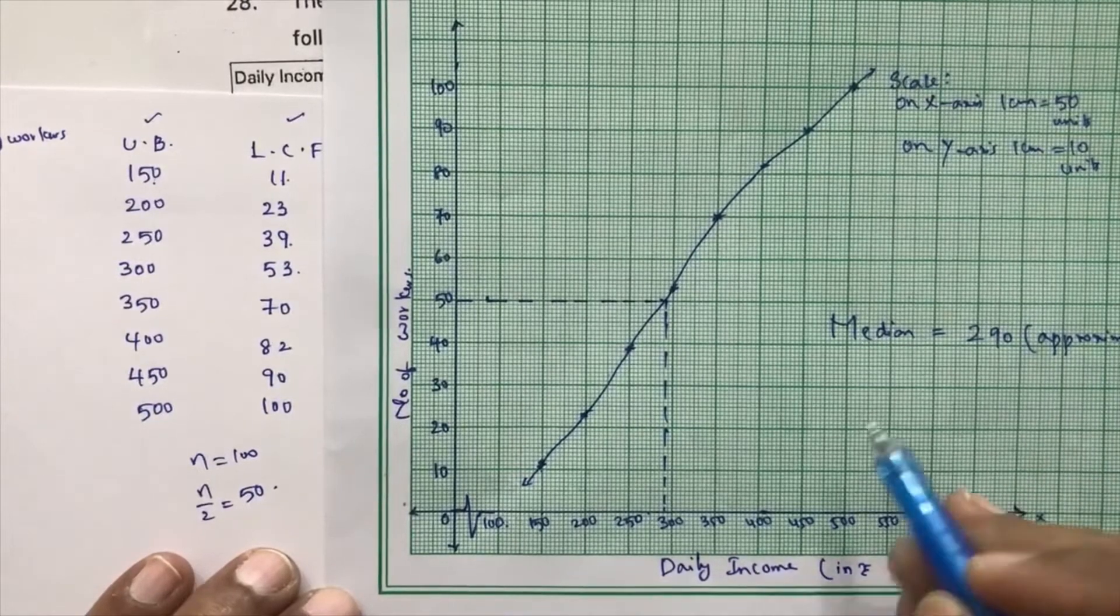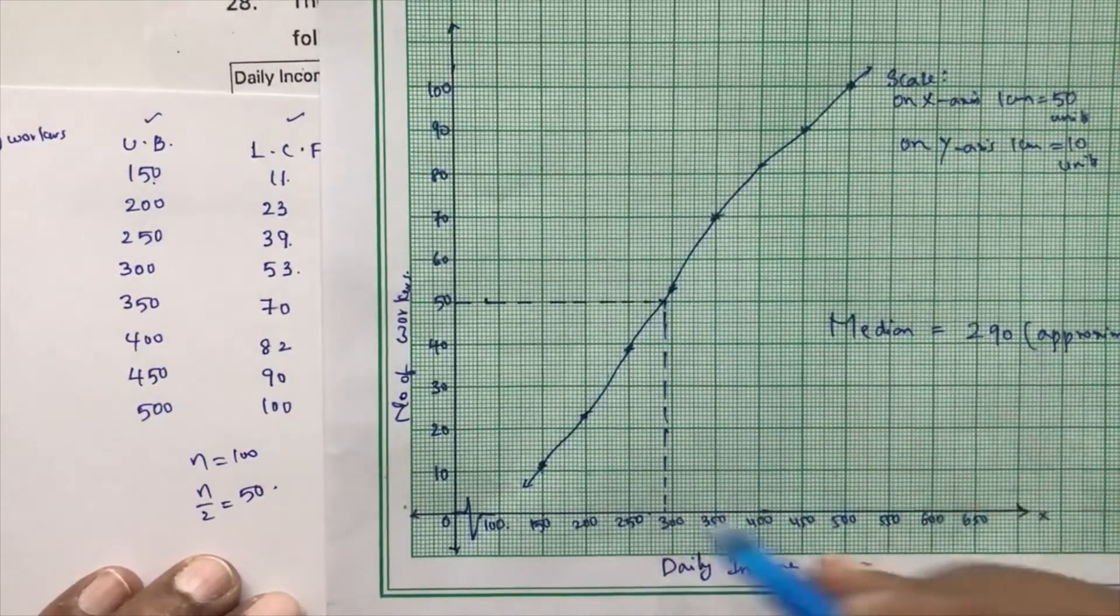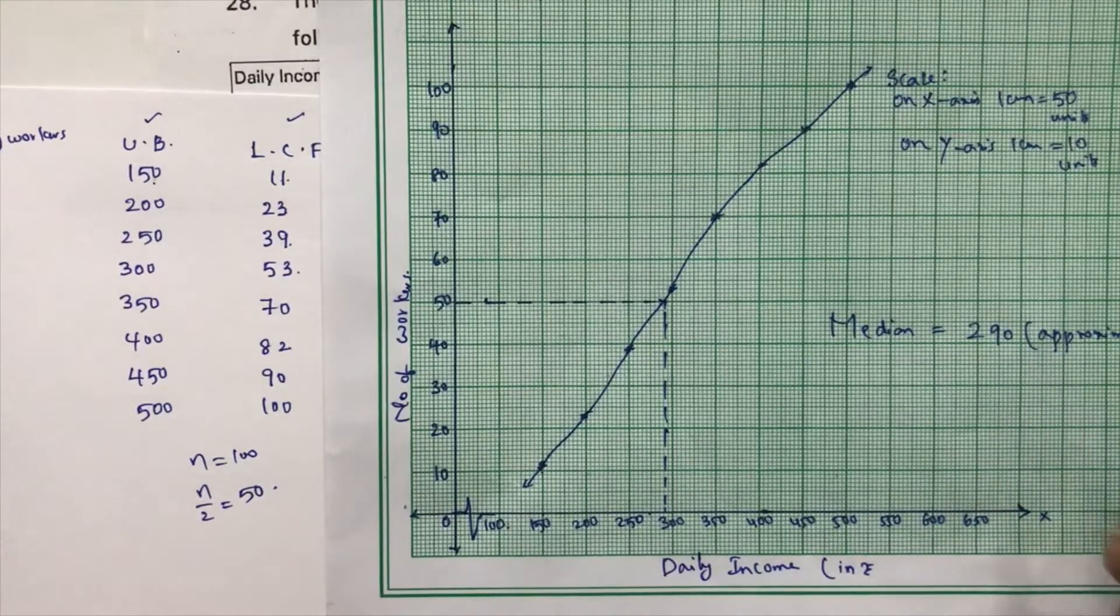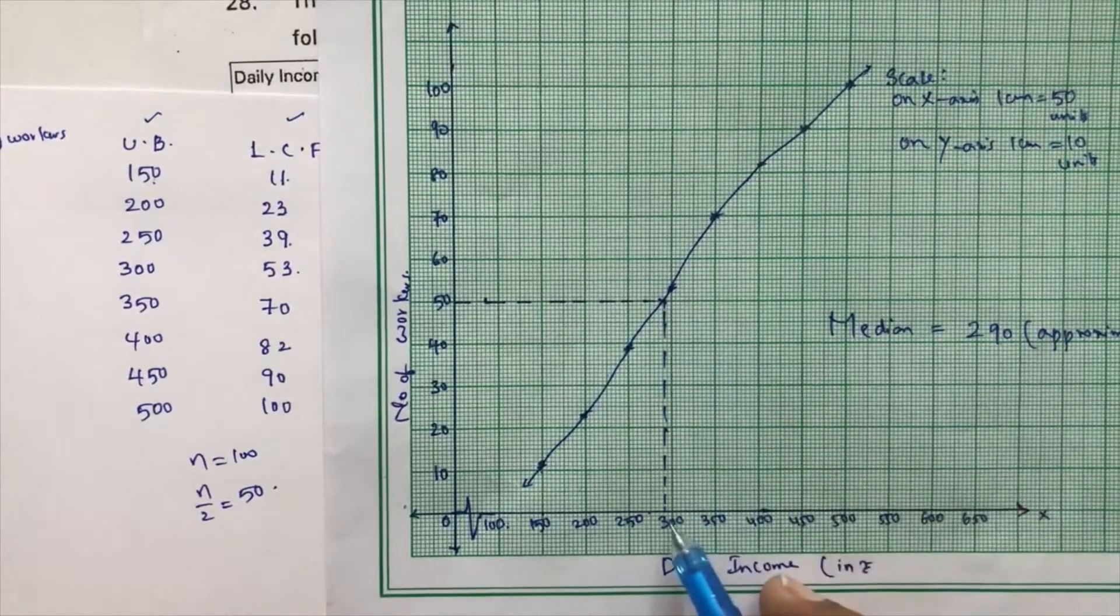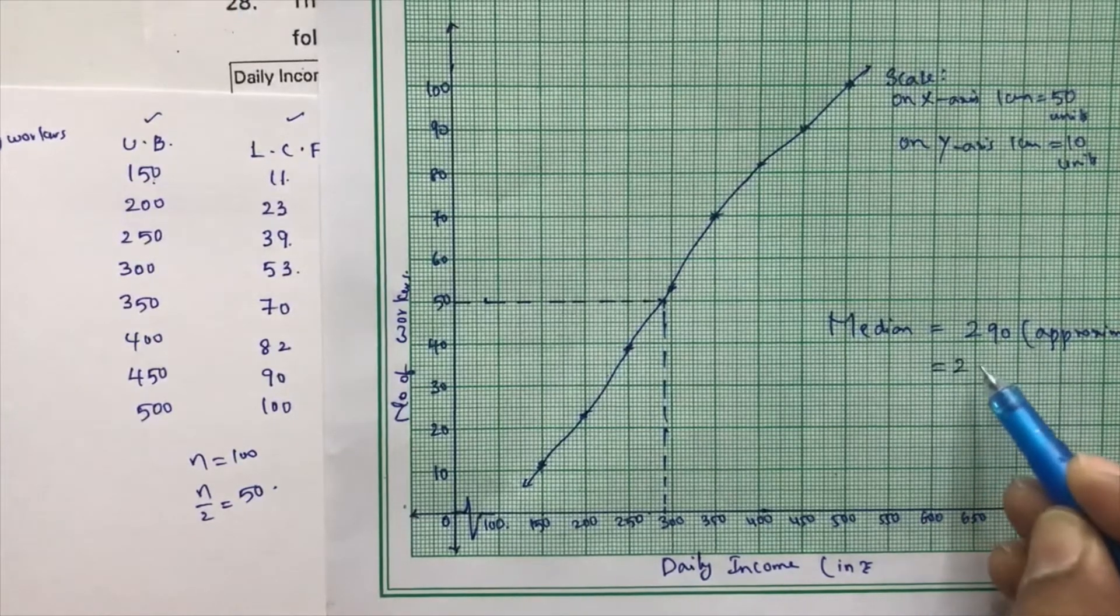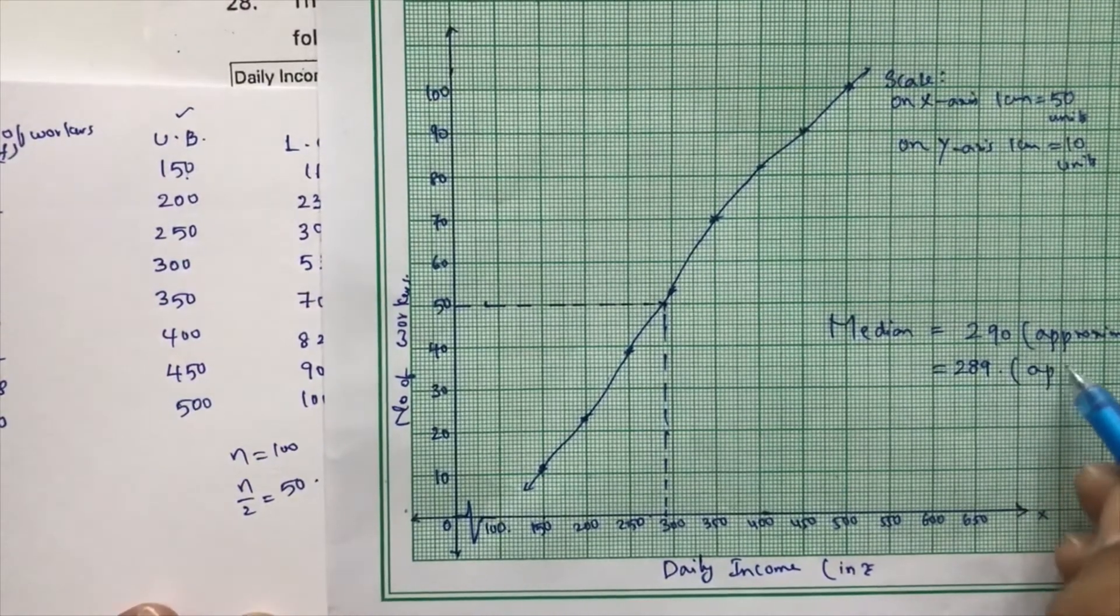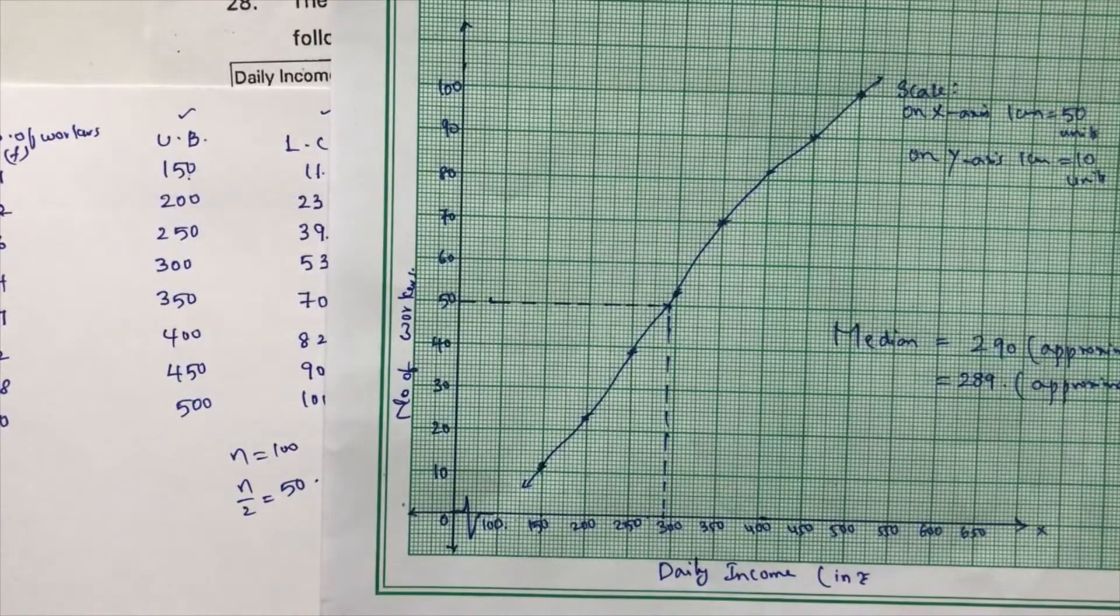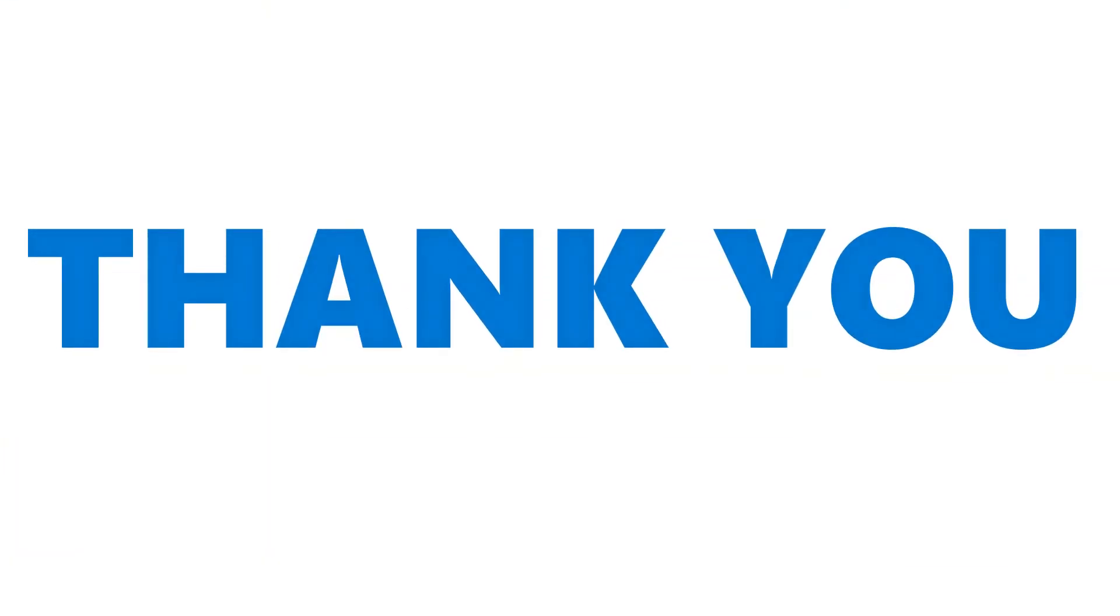See, if you'll calculate exactly with the help of formula, L plus n by 2 minus cf by small f into h, you'll get the exact value. So you can write that otherwise. Like you'll get something around 289.5 something, 289.2. So but median, you can write 290. Because the abscissa at this value, like where it cuts x-axis, that value is the median. So median is 290 approximately. Or you can do the problem in rough and you can write 289 approximately. Okay. In this way, we need to draw the ogive. Thank you.